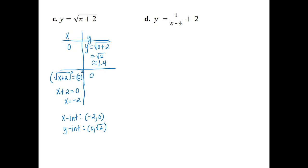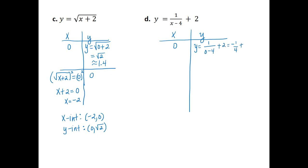Part D: y equals 1 divided by (x minus 4) plus 2. We let x equal 0 and solve for y. So y would be equal to 1 divided by (0 minus 4) plus 2, which is negative 1 fourth plus 2. Getting a common denominator of 4, 2 is equivalent to 8 fourths. So negative 1 fourth plus 8 fourths is 7 fourths.